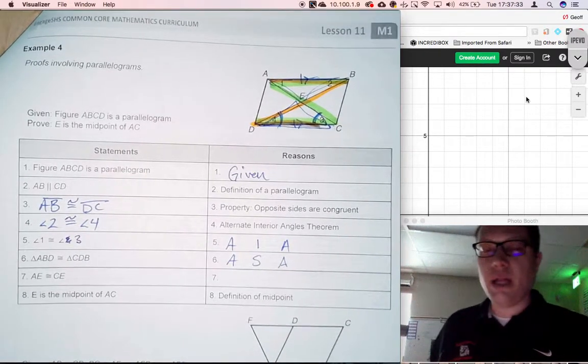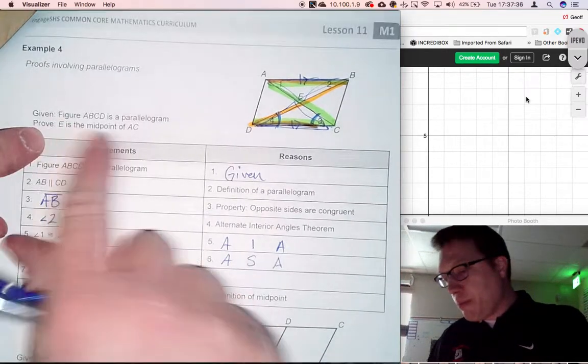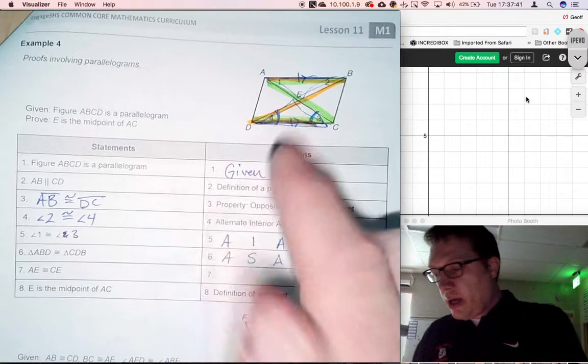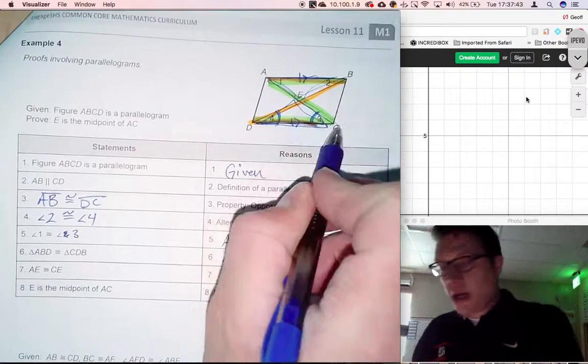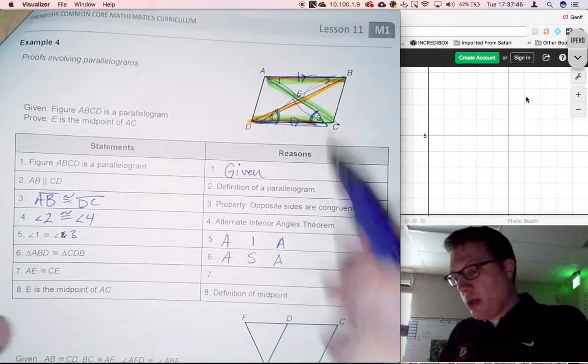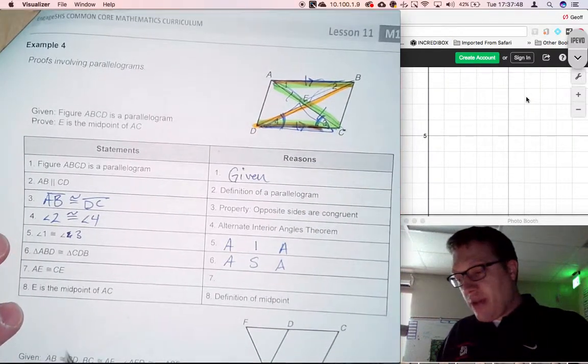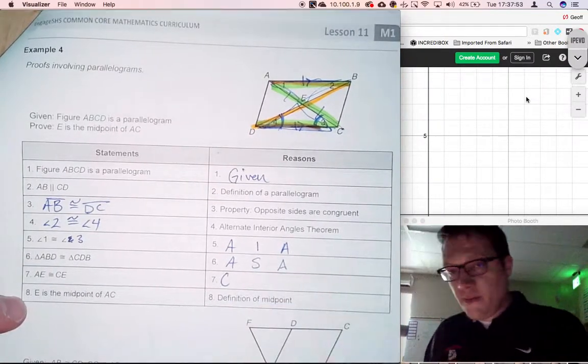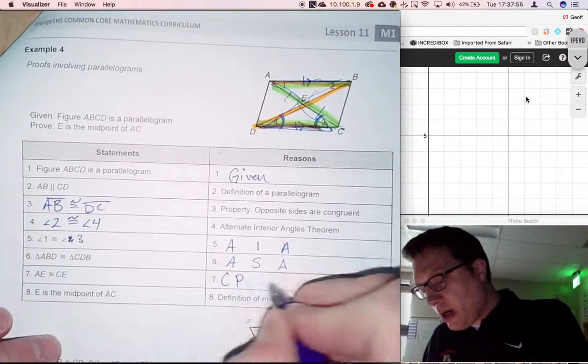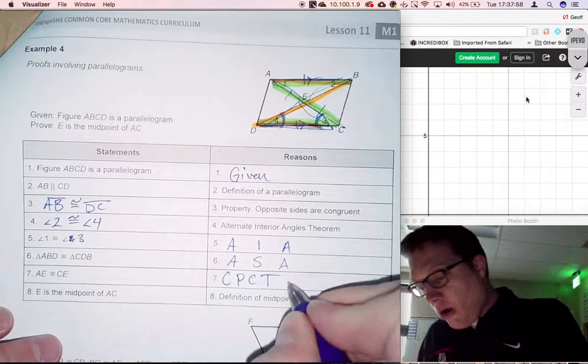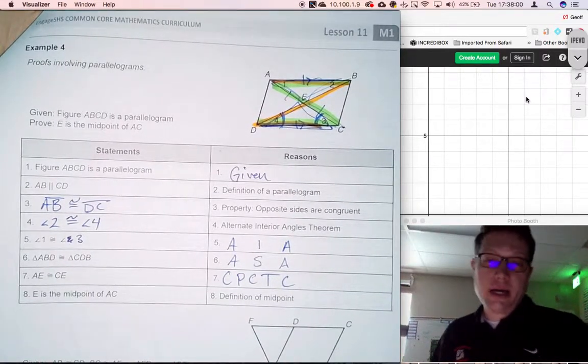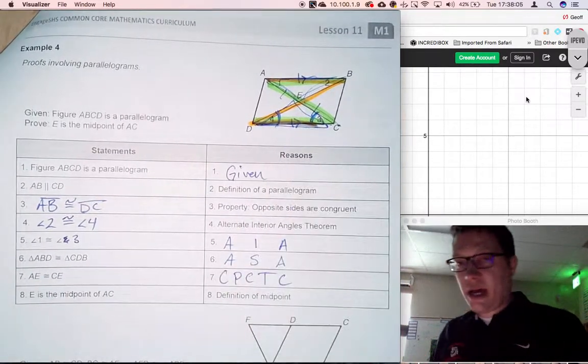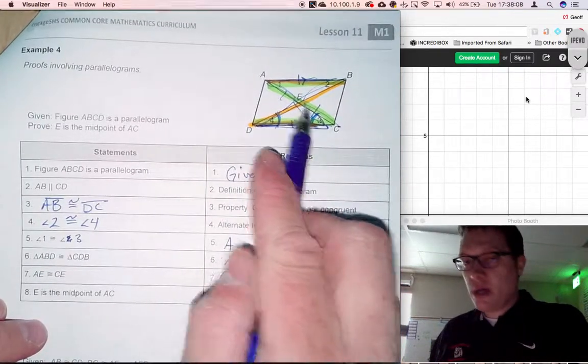We have one more line to fill in, but if we're going to show that E is the midpoint, that means along line AC, E is exactly in the middle. This line and this line are the same length. We get that if the triangles are the same size. AE and CE correspond, and they are parts of congruent triangles, so they are congruent. By CPCTC, we get that those two are the same length, and therefore E has to be in the middle because this half equals this half.